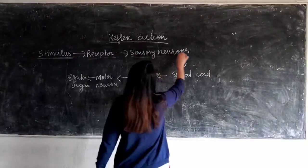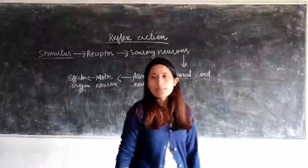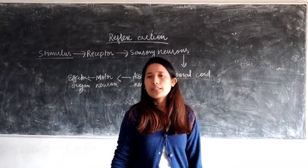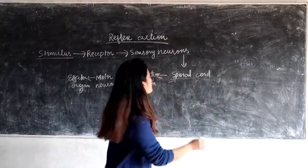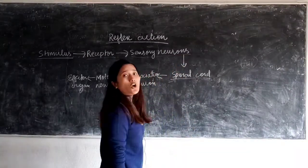Now sensory neuron takes the message to the brain. Instead of taking the message to brain, instead of taking the message to the brain, you take the message to the sensory neuron, you take the message to the spinal cord.